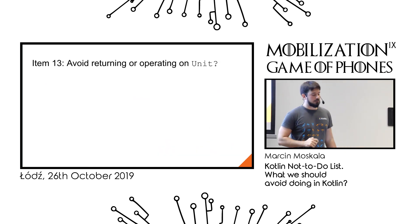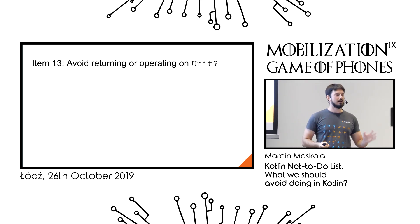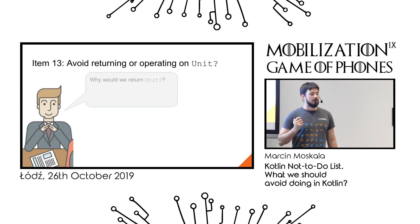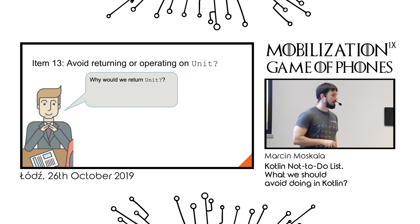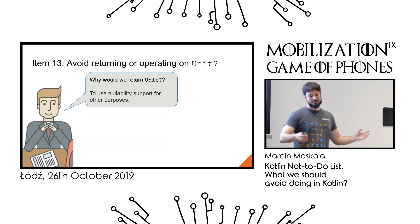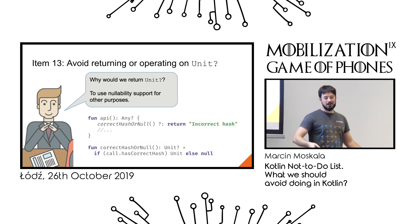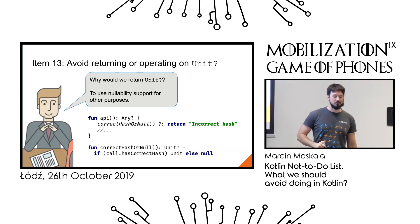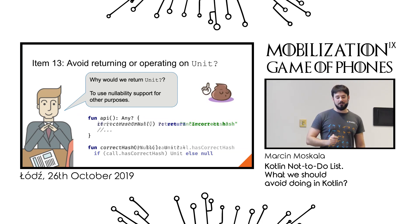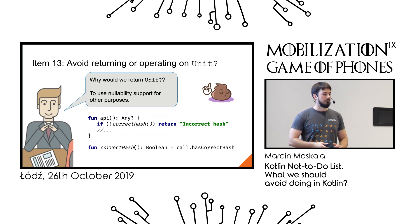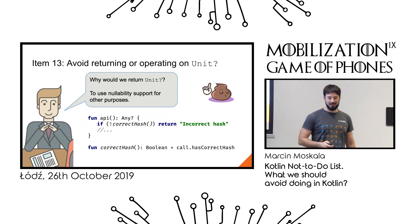One related thing is to avoid operating on nullable Unit. Unit? has two possible values — null or Unit — so it's like a Boolean. The idea was to use the Elvis operator with return when null signals a problem. But this is a terrible idea. We have Boolean for that, and Boolean is clearly easier with better support. Operating on nullable Unit makes code surprising and unnecessarily complicated.